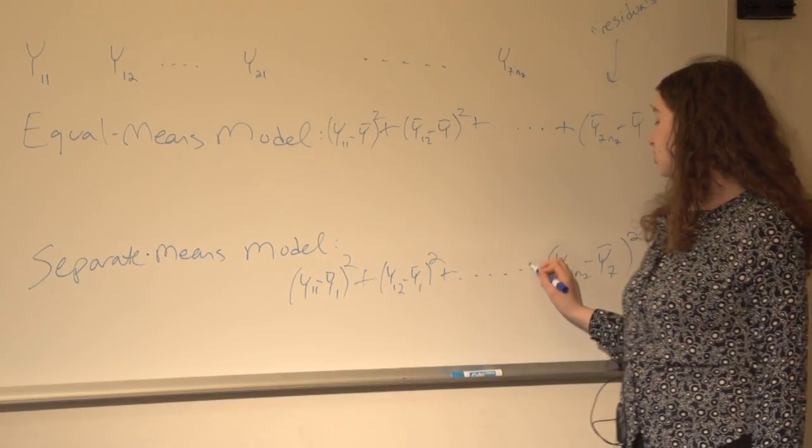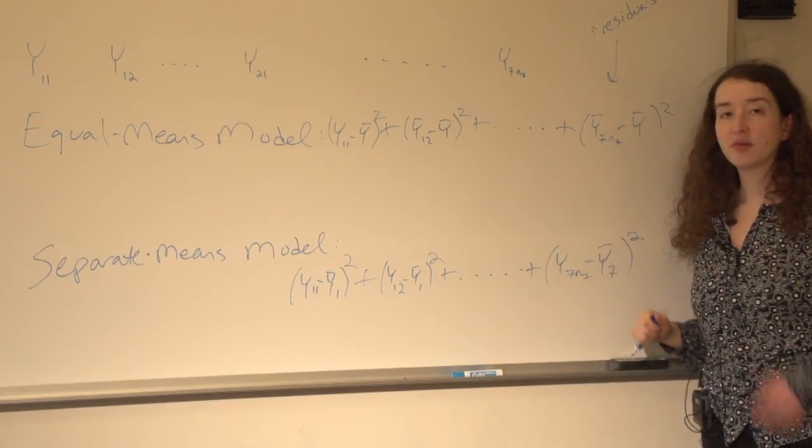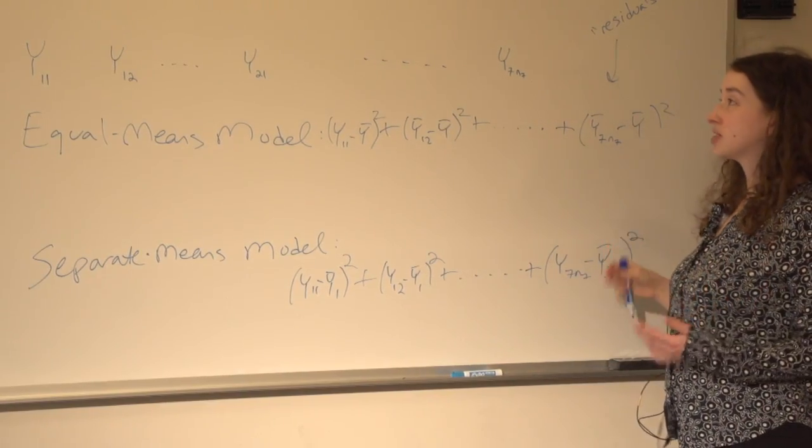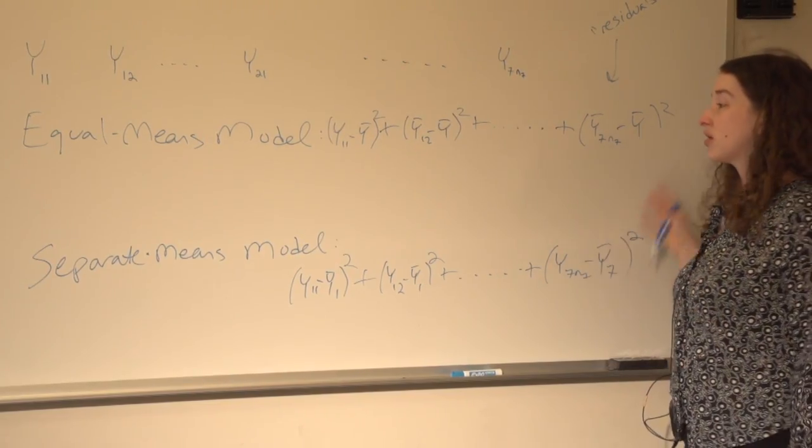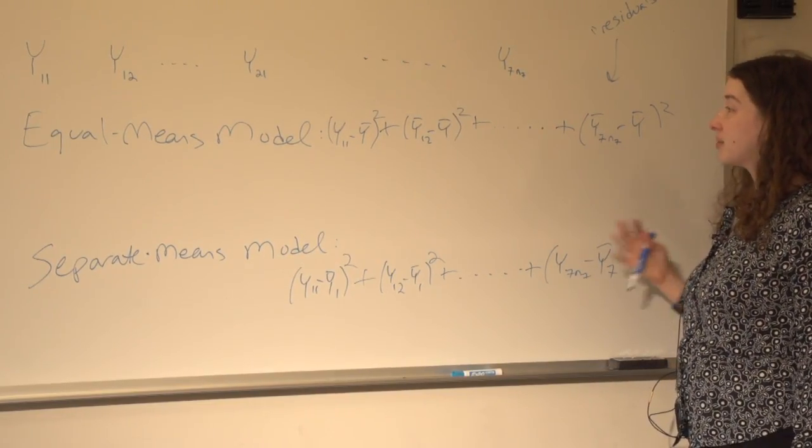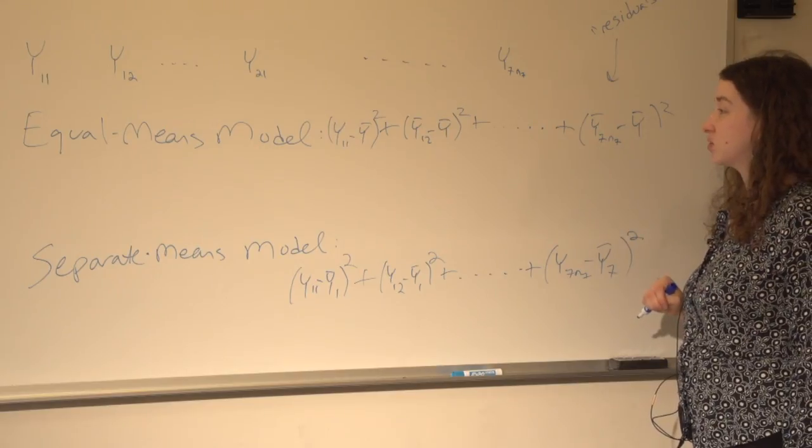We're going to take the sum of the squared residuals. If you're familiar with ANOVA and you've heard terms like sums of squares residuals, sums of squares between, sums of squares within, that's where all this comes from. We're adding up the squares of residuals.